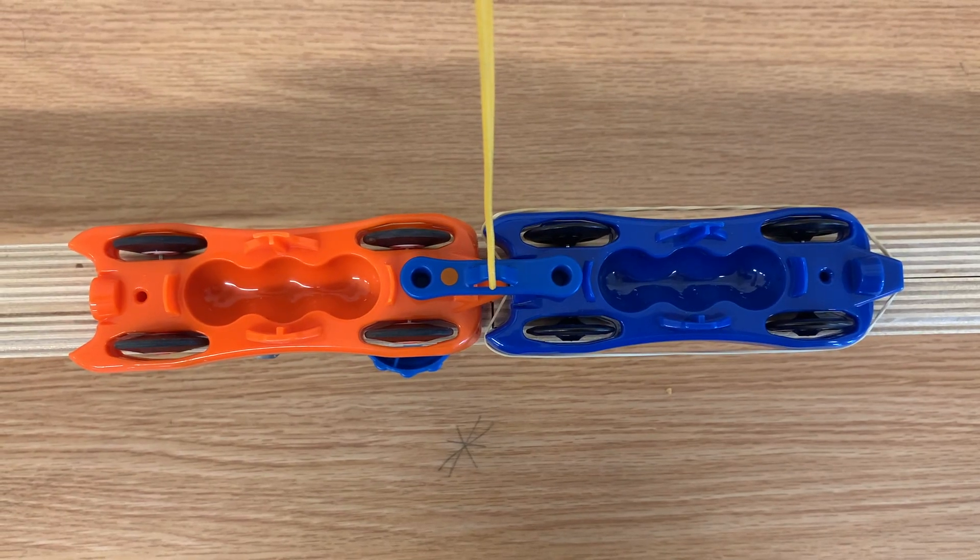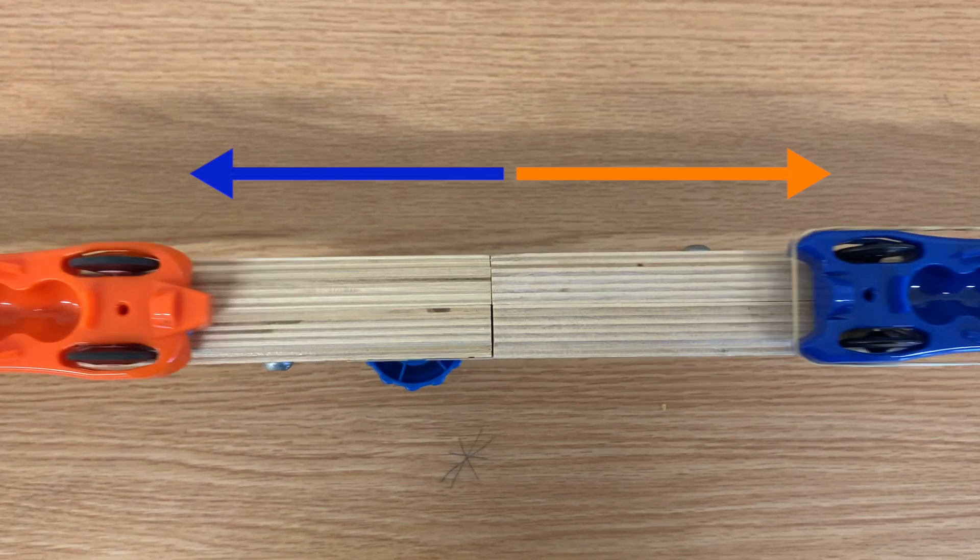That's because when the rubber band pushed the orange car, the orange car pushed back on the rubber band.